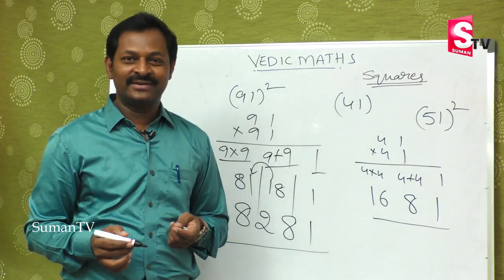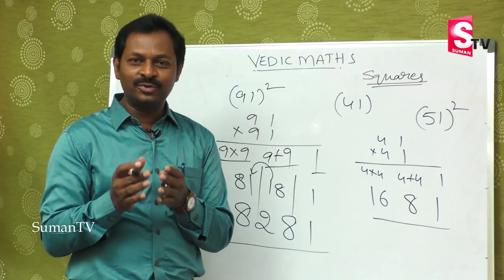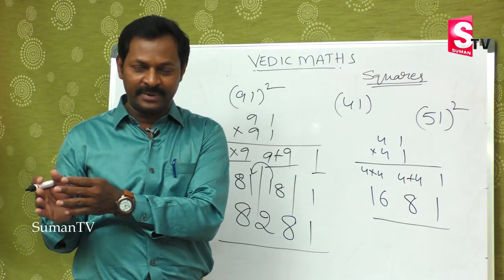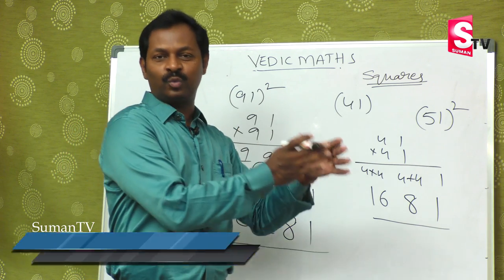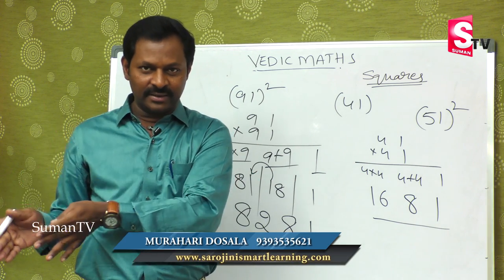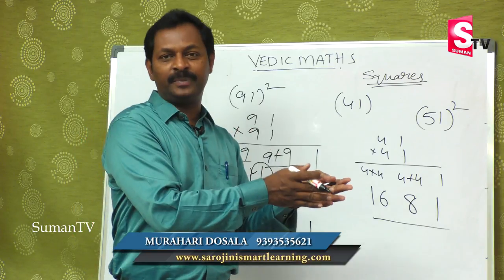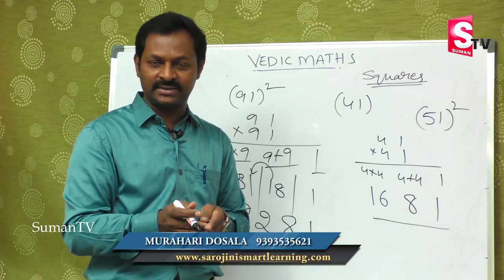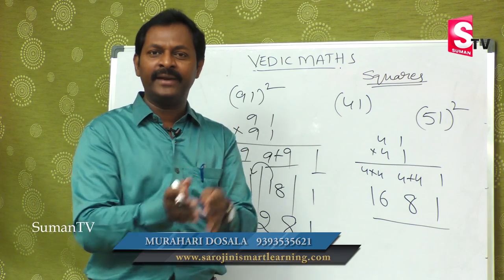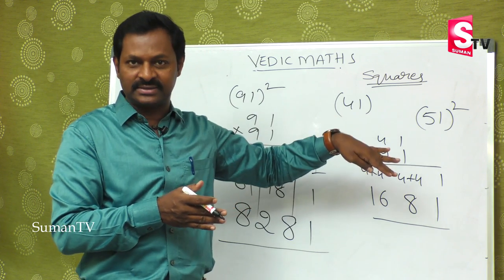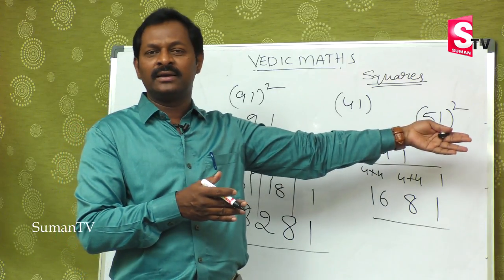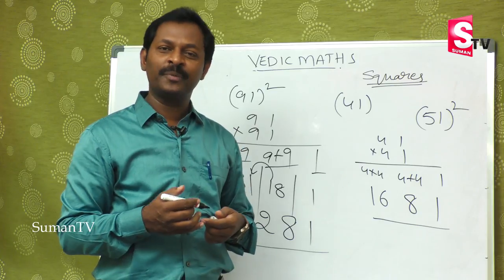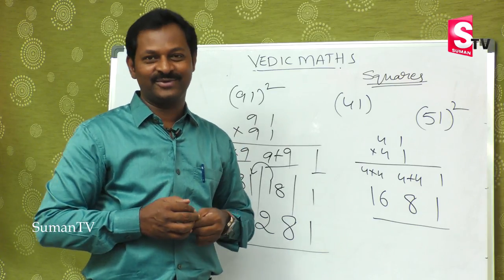So how was this class? Squares can also be done in the simplest form. If the numbers start with 1, we write 1 first, then add, then multiply. If the numbers end with 1, we multiply first, then add, then write 1 at the end. Hope you understood this class.